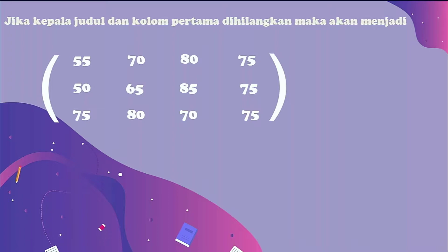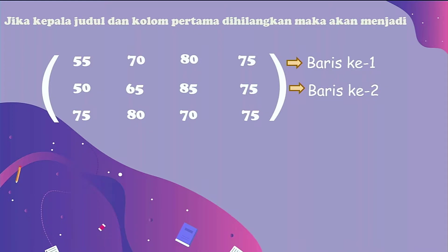Di sini terdiri atas beberapa angka, ada 55, 70, 80, 75. Untuk yang horizontal, ini disebut dengan baris. Karena 55, 70, 80, 75 terletak pada urutan pertama, maka dia disebut dengan baris pertama atau baris ke-1. Sedangkan angka 50, 65, 85, 75 disebut dengan baris ke-2. Berikutnya, angka 75, 80, 70, 75 disebut dengan baris ke-3.